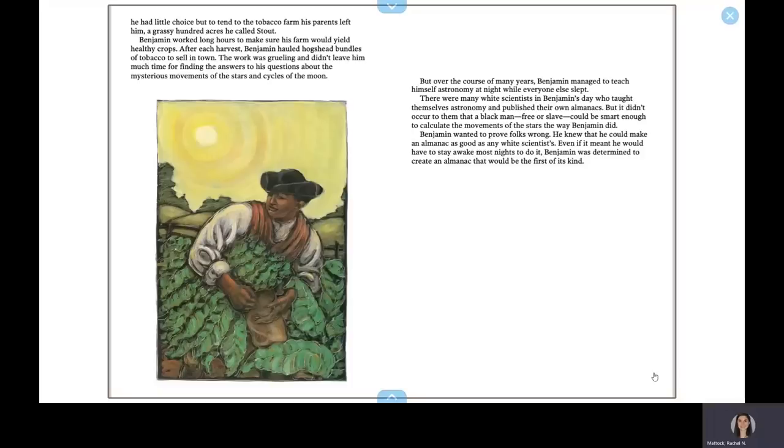A grassy hundred acres he called Stout. Benjamin worked long hours to make sure his farm would yield healthy crops. After each harvest, Benjamin hauled hogshead bundles of tobacco to sell in town. The work was grueling and didn't leave him much time for finding the answers to his questions about the mysterious movements of the stars and cycles of the moon. But over the course of many years, Benjamin managed to teach himself astronomy at night while everyone else slept.